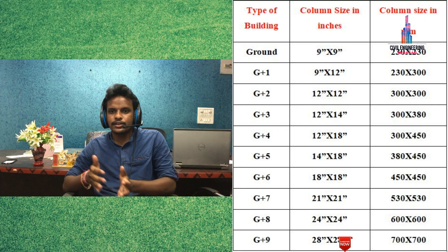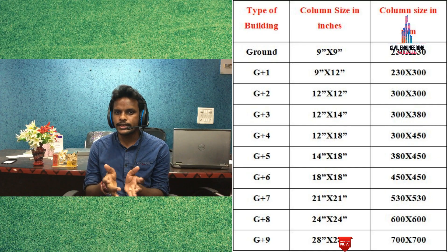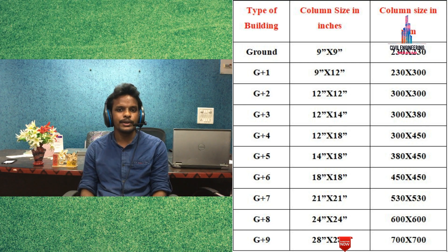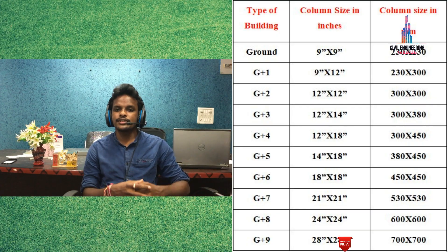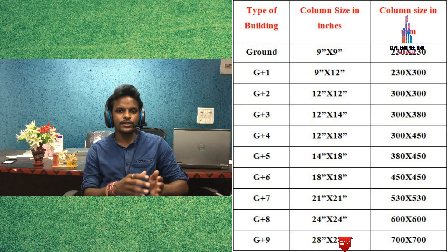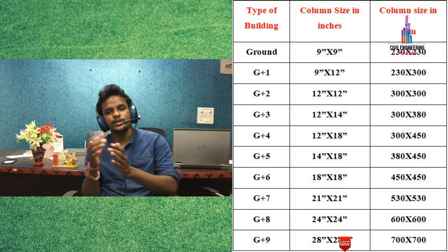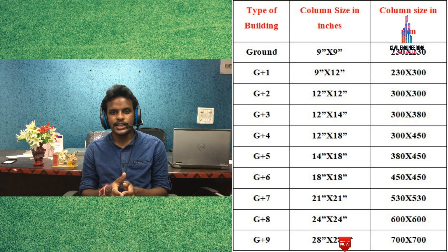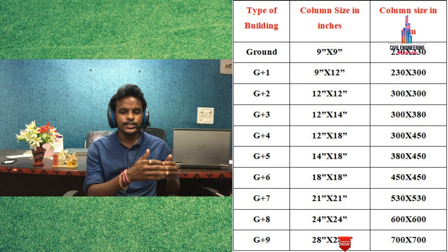For a G+2 building, the column size is 12 inches cross 12 inches, approximately equal to 300 mm cross 300 mm. For a G+3 building, the column size is 12 inches cross 14 inches, which is approximately equal to 300 mm cross 380 mm.